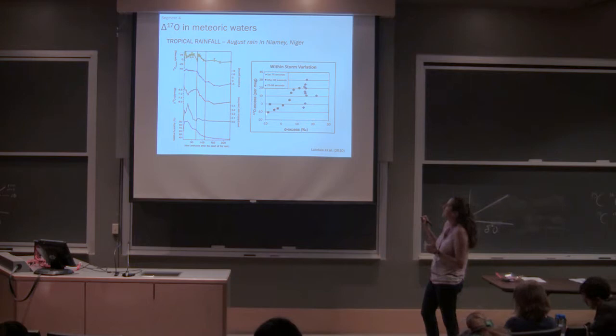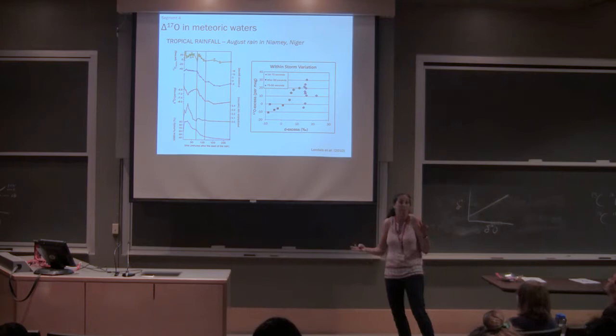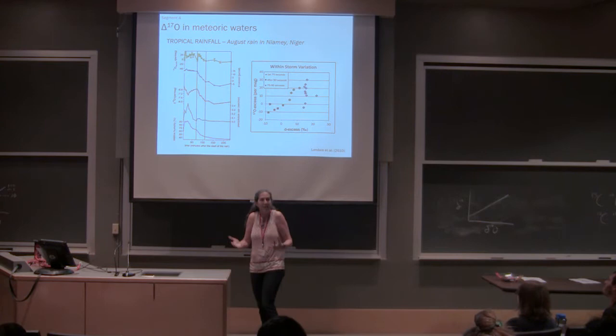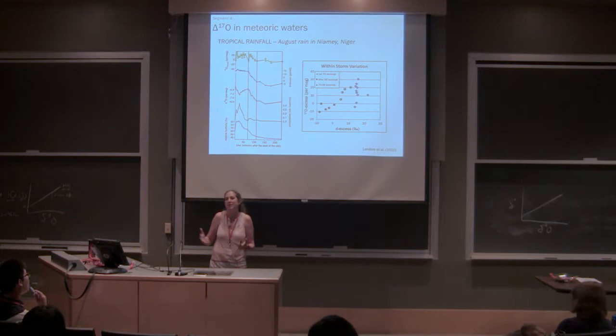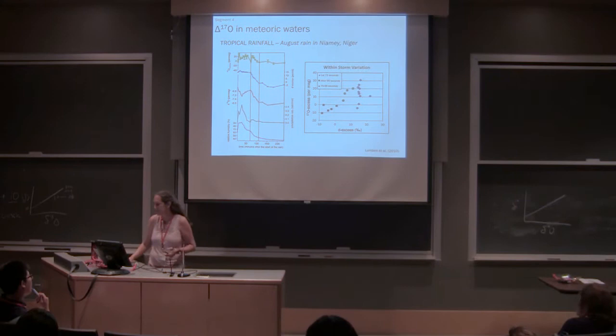This is something that she didn't focus on in her paper, but within storm variation that's really valuable. She sees a 40 per meg variation, which is the difference that Boas Lewis sees between sea water and his average meteorite water. So this is a big, I can definitely get within 10 per meg and on a good day within 5 per meg variation. So this is within our error of what we can really understand.